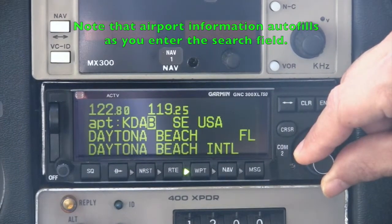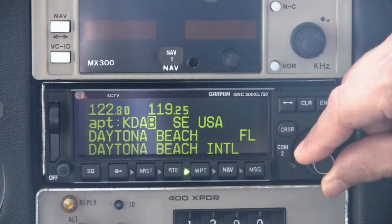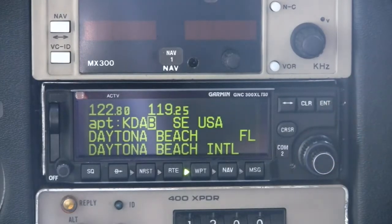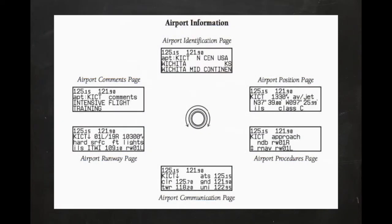When the desired airport is displayed, press the cursor key once to remove the cursor highlight. The airport information is divided into six pages as shown here. To move between pages, ensure the cursor highlight is hidden from view and use the large outer knob to scroll.